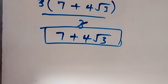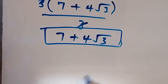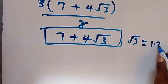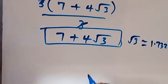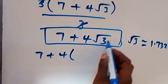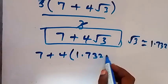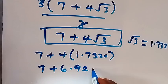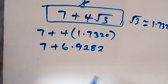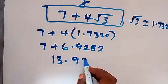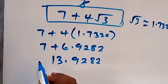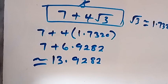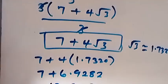If we also want to express this as a decimal, we use root 3 approximately equals 1.7320. So we have 7 plus 4 multiplied by 1.7320, which gives 7 plus 6.9282. Adding these up, the approximate value is 13.9282. So the solution is 7 plus 4 root 3, or approximately 13.9282.